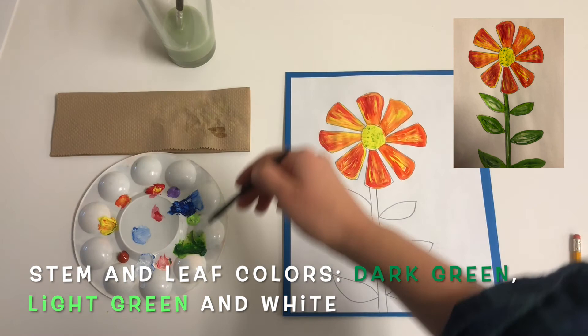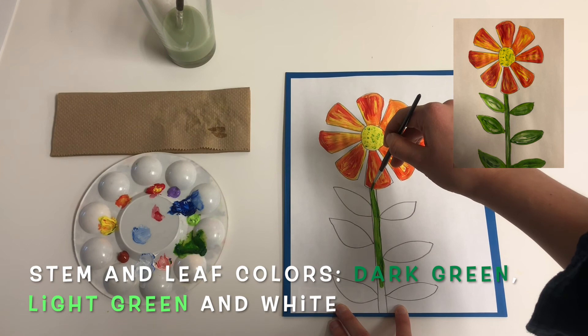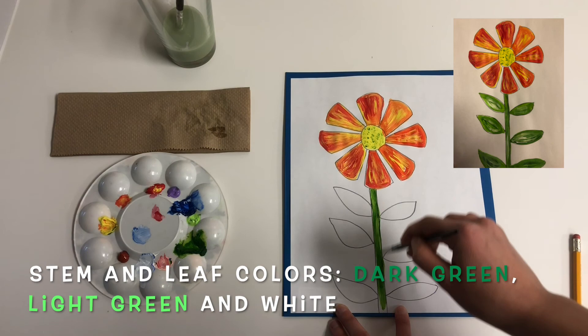And we are going to move on to green. And we are going to do the same technique. So we are going to layer the two different colored greens and a little bit of white. And take our time painting in the stem and the leaves of our flower. And when this is finished, we are going to cut it out. And we are going to put it on a piece of paper. So, I will show you how that looks in a minute.